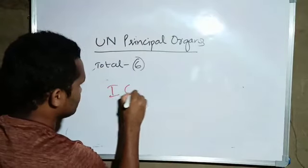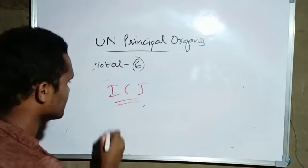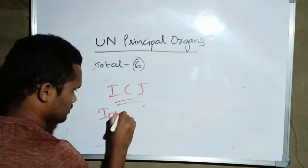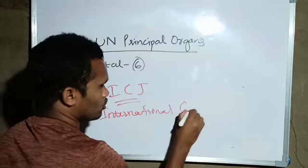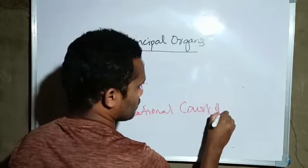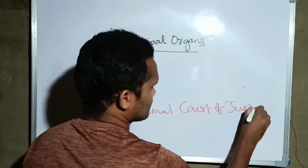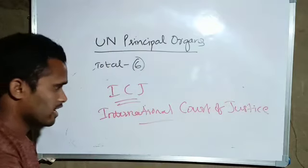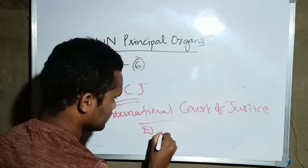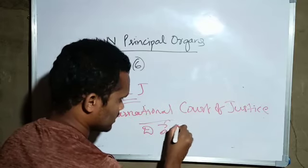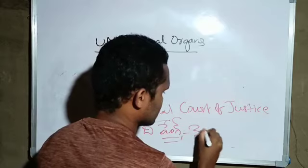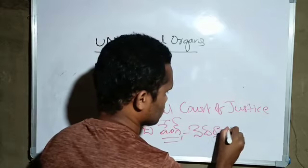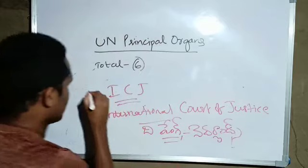Next is ICJ - International Court of Justice, Antarjatiya Nyayasthana. This is in The Hague, a city in Netherlands.